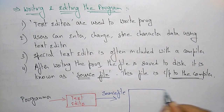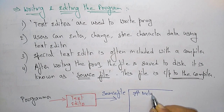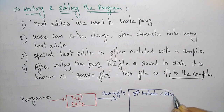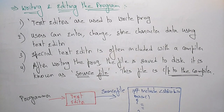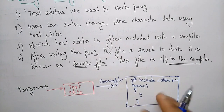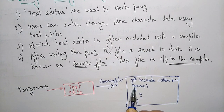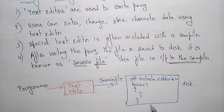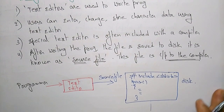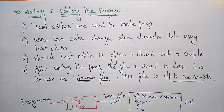Whatever program I have entered — for example, #include stdio.h, which is the library function, and the main program — this file is saved as a source file to disk, and then it becomes the input to the compiler. So here I have explained writing and editing the program. In the next video, I will explain how to compile the program. Thank you.